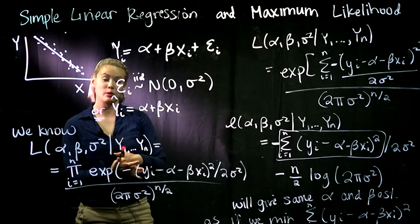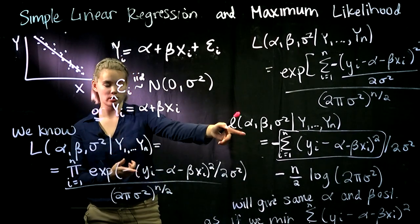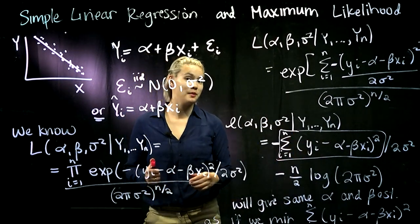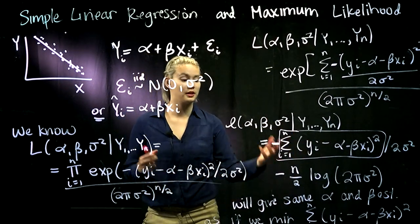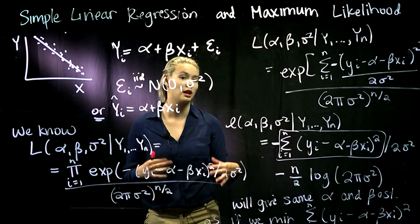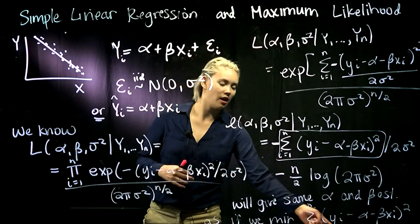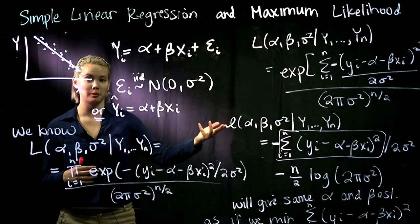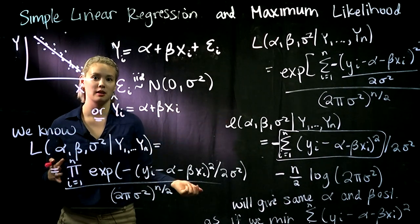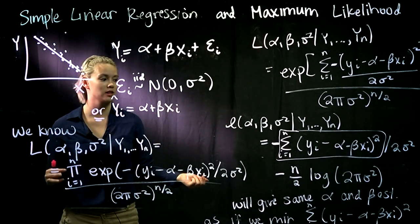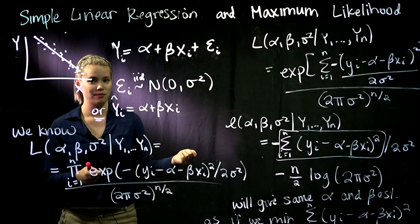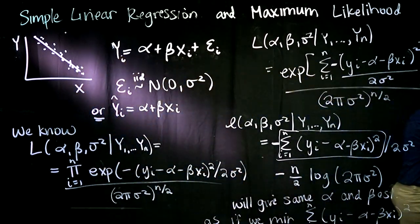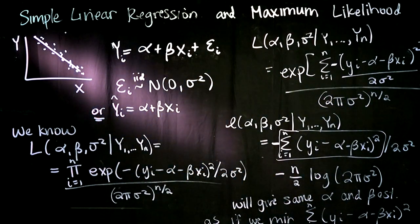This will give the same alpha and beta estimators as if we minimize the sum of yi minus alpha minus beta xi squared, which is actually the residual sum of squares, or RSS for short. So when we take our likelihood or log likelihood and maximize that, the alpha and beta estimators are the same as those we get when we minimize our residual sum of squares. We can see the method of maximum likelihood and the method of ordinary least squares give us the same alpha and beta estimators. Thanks.